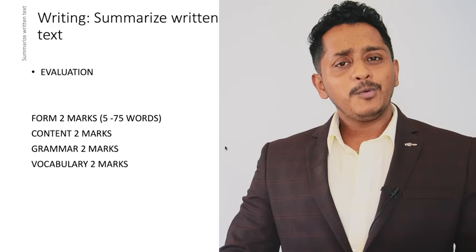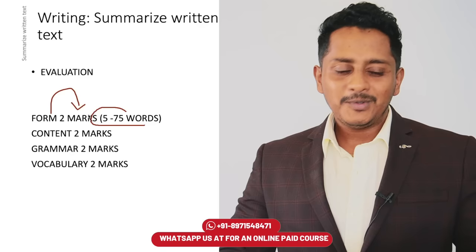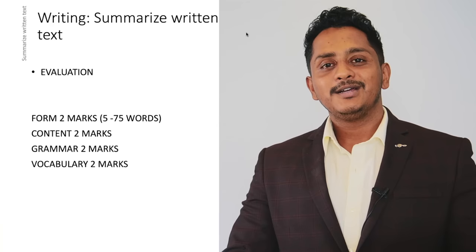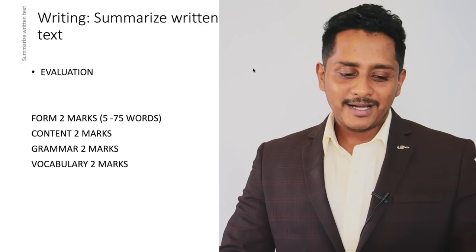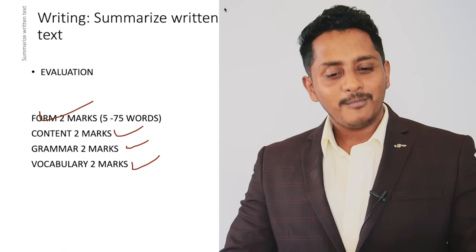How are you evaluated? Pearson says form will be two marks — meaning if you write between 5 to 75 words, you will get two out of two. Content is two marks. Grammar is two marks. Vocabulary is two marks. Don't worry about all these things. I will show you a simple method — in fact, four simple methods. Just follow any one of those and you will get full marks for content, grammar, vocabulary, form and everything.